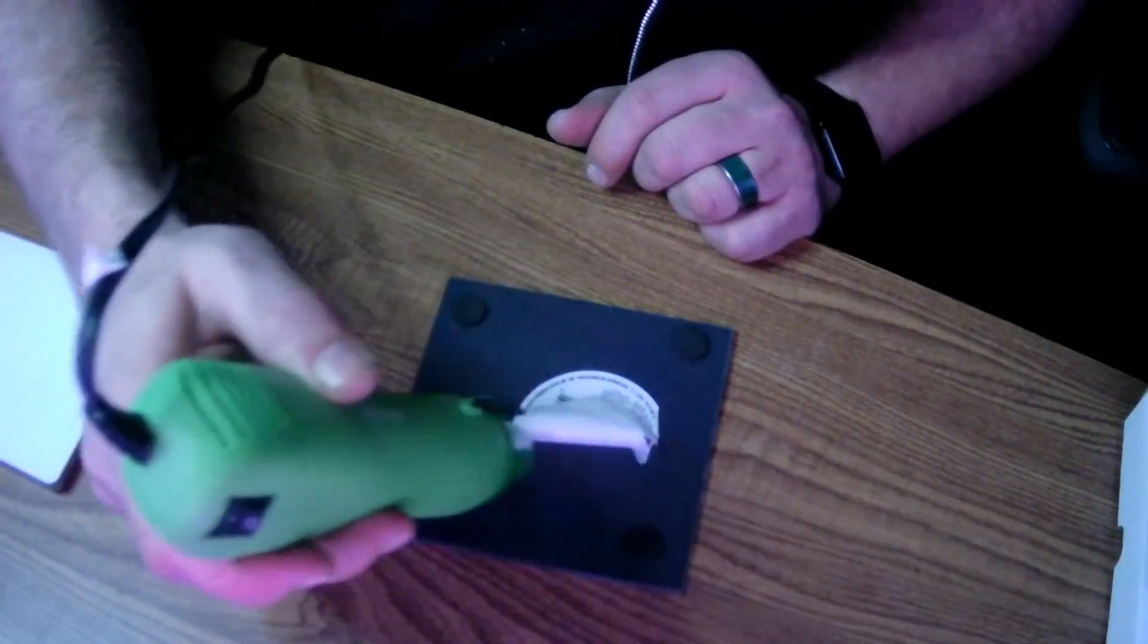Hit it again. Hit it on this side. Do not do that with your fingers there, not on that gun—that thing will burn you. Now you can see it's peeling off a lot better. I want to leave some residue so I can show you how to get that off as well.